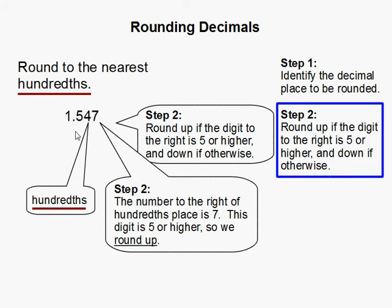So the number to the right of the hundredths place is 7. This digit is 5 or higher, so we round up.